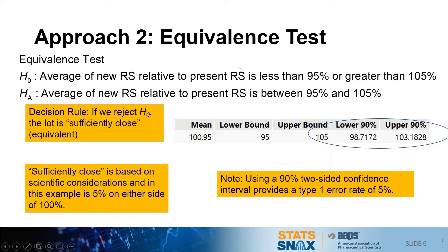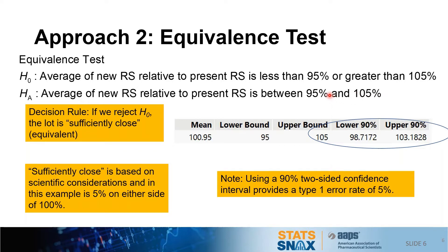So if the difference test isn't the proper way to demonstrate that we have a reference standard close enough to 100%, how might one do it? The answer is with an equivalence test. The problem with the difference test is the hypotheses aren't set up such that the alternative states what we'd like to show. In an equivalence test, the hypothesis says exactly what we're trying to demonstrate: namely, that the average of the new reference standard is between 95% and 105%. This puts numbers to the term 'sufficiently close,' and this range of 95 to 105 comes from subject matter experts, understanding of the process, and the analytical intermediate precision of the method — it comes from scientific considerations.